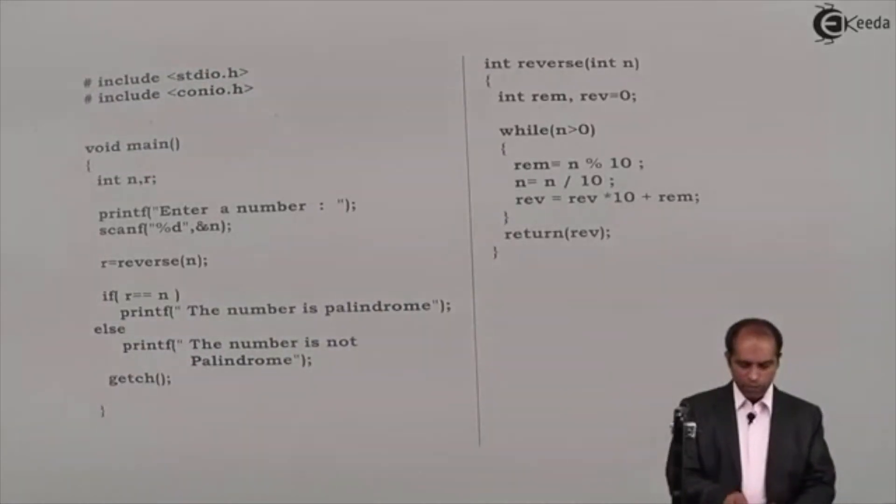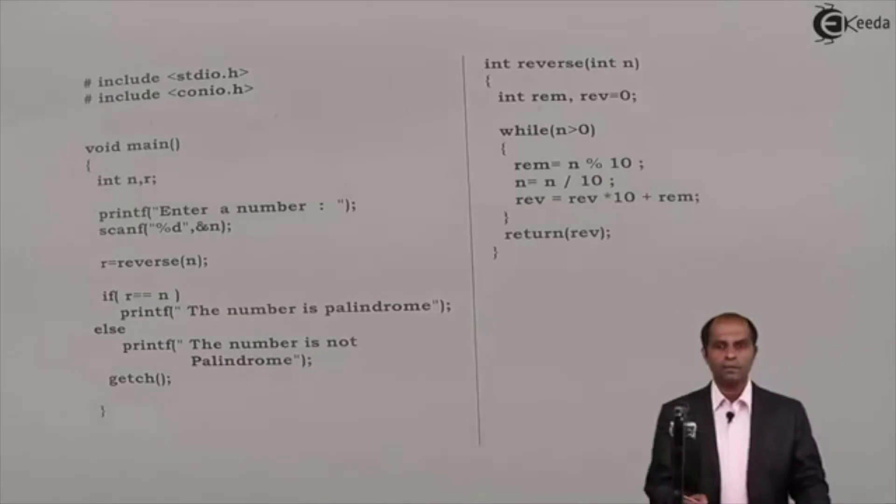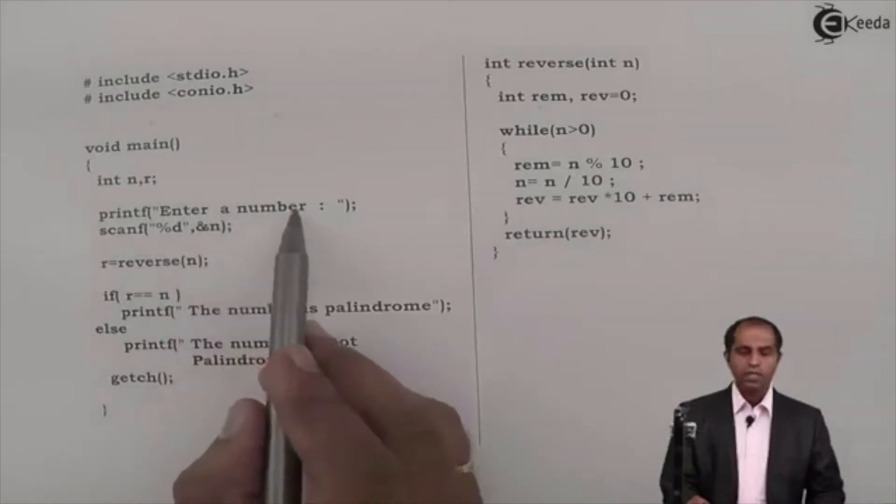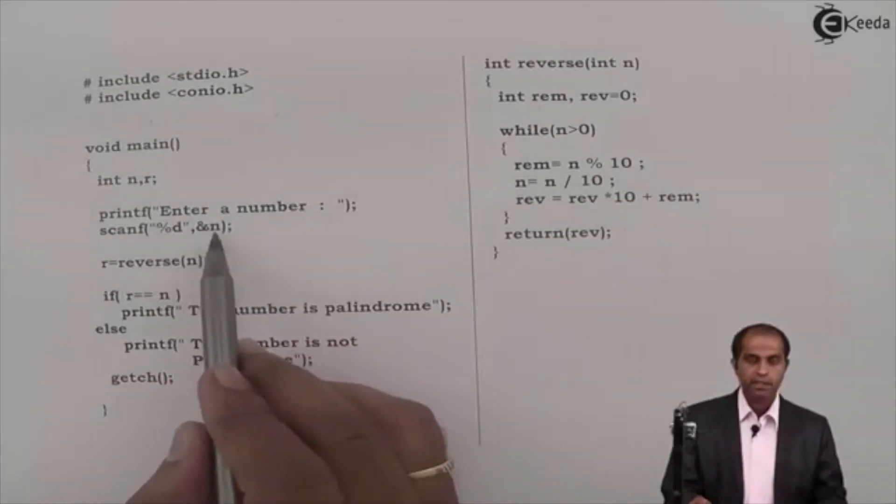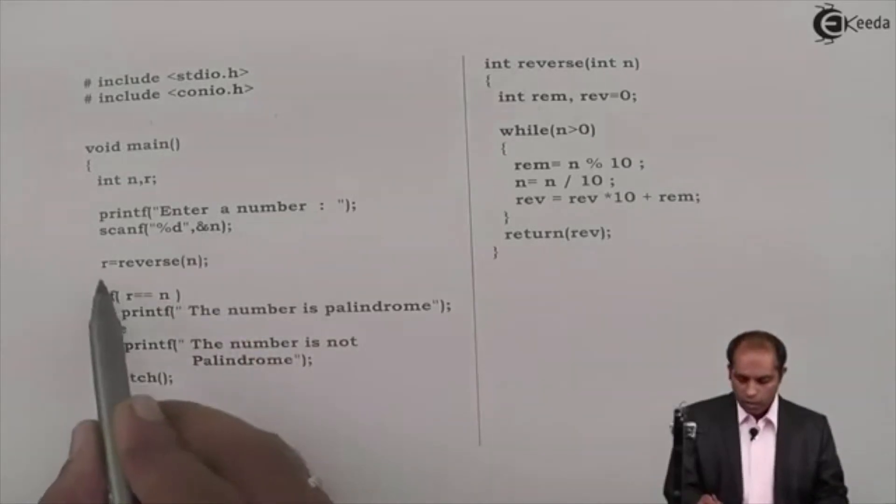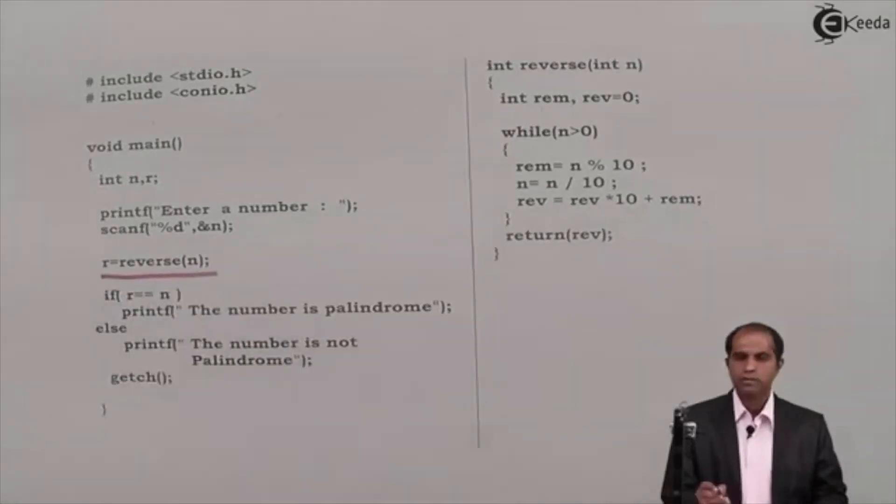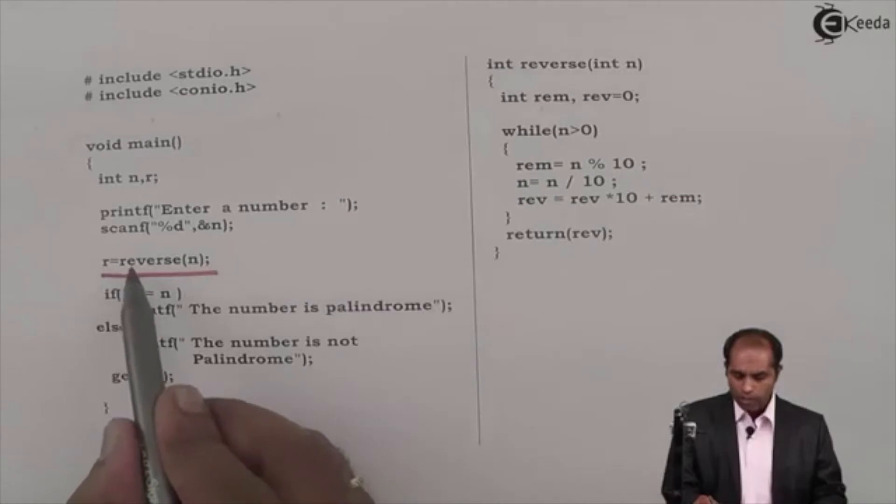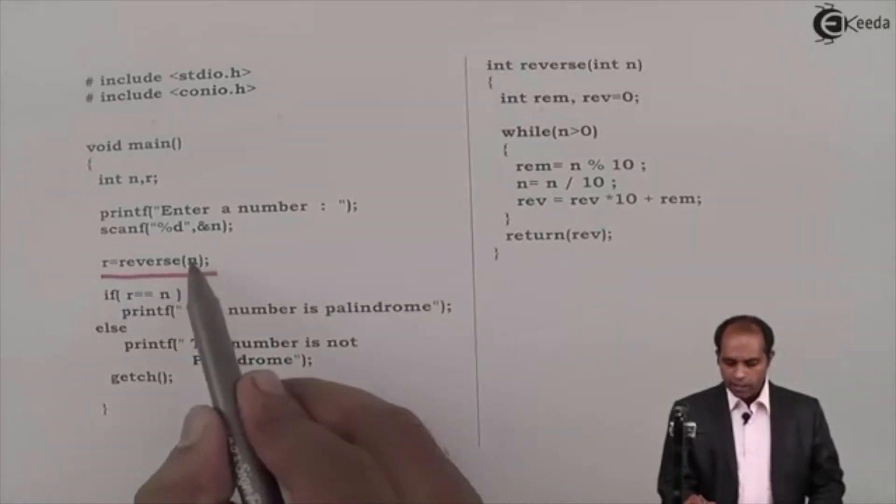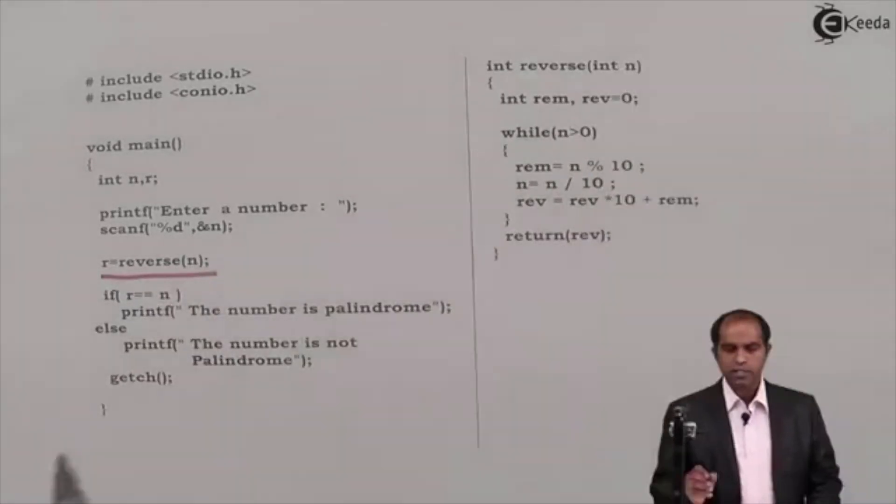So part of the program has been written for you. Some instructions I am going to add up. So I will ask the user to read a number, that is enter a number and read that into n. Now here you will find a function call at this place. I am going to give a call to a function by name reverse that takes n and uses functions.